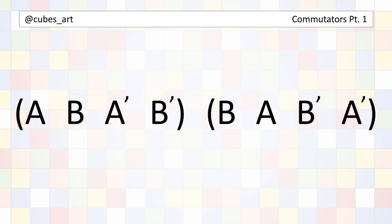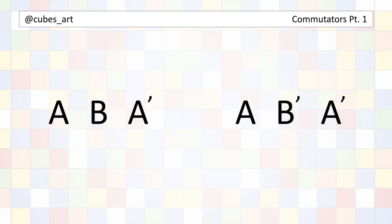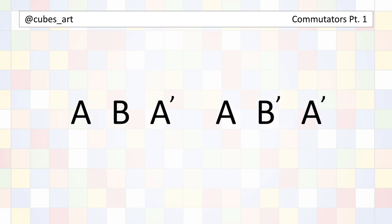If we put them next to each other and think about these eight moves in sequence, we can see that the two middle moves, the B' and B, will undo each other.